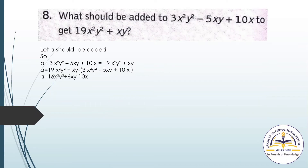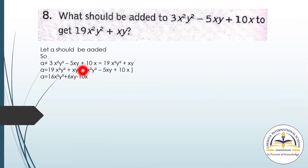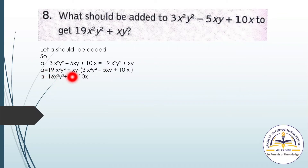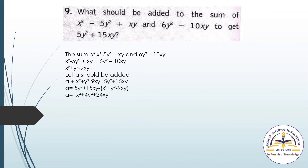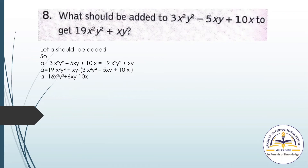Question number 8: What should be added to 3x²y² minus 5xy plus 10x to get 19x²y² plus xy? We consider the unknown as a. So: a plus (3x²y² minus 5xy plus 9x) equals 19x²y² plus xy. Then a equals the result when you transfer the known term to the RHS and solve to find the value of a.